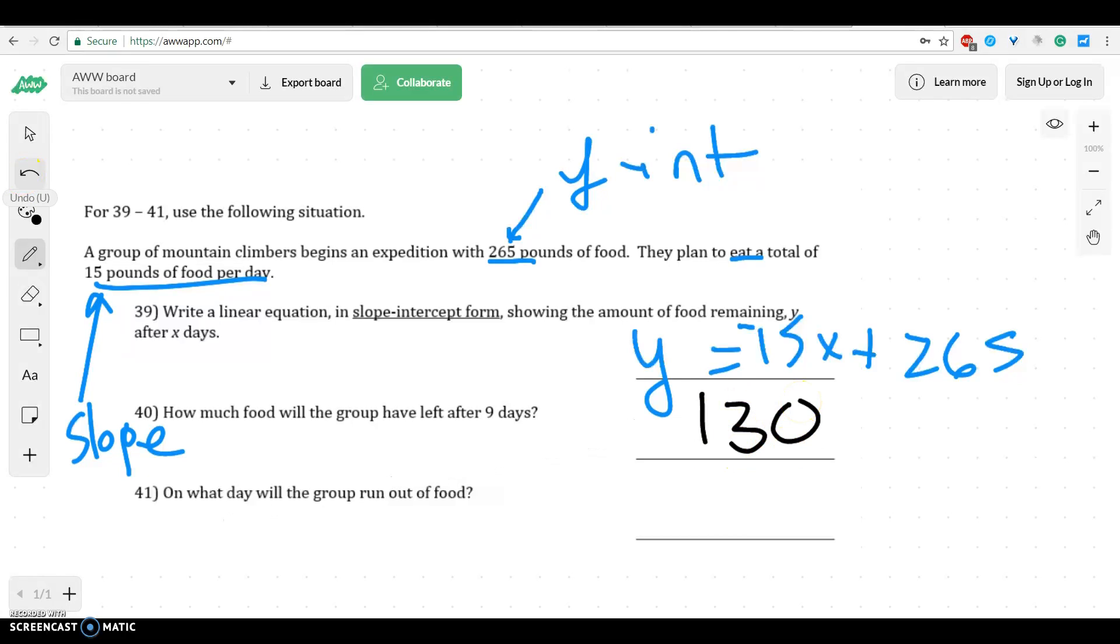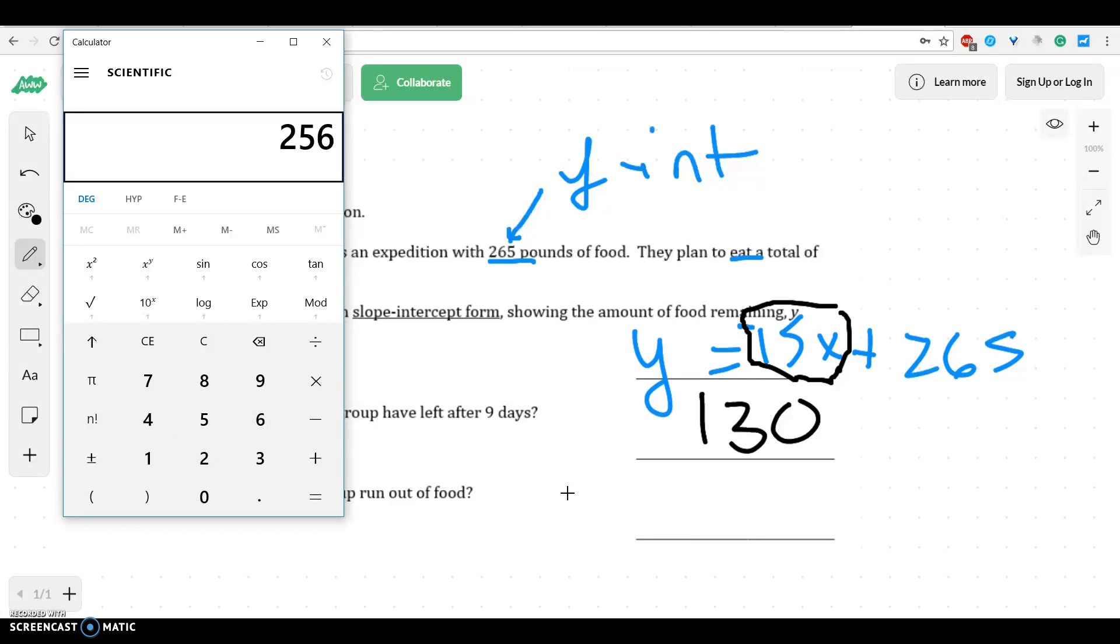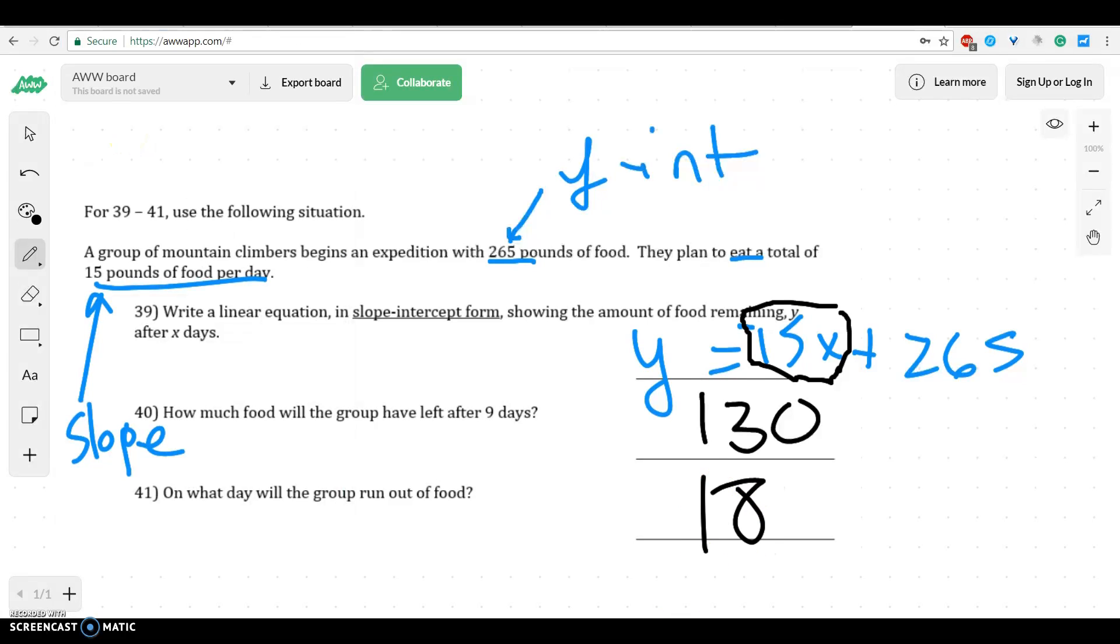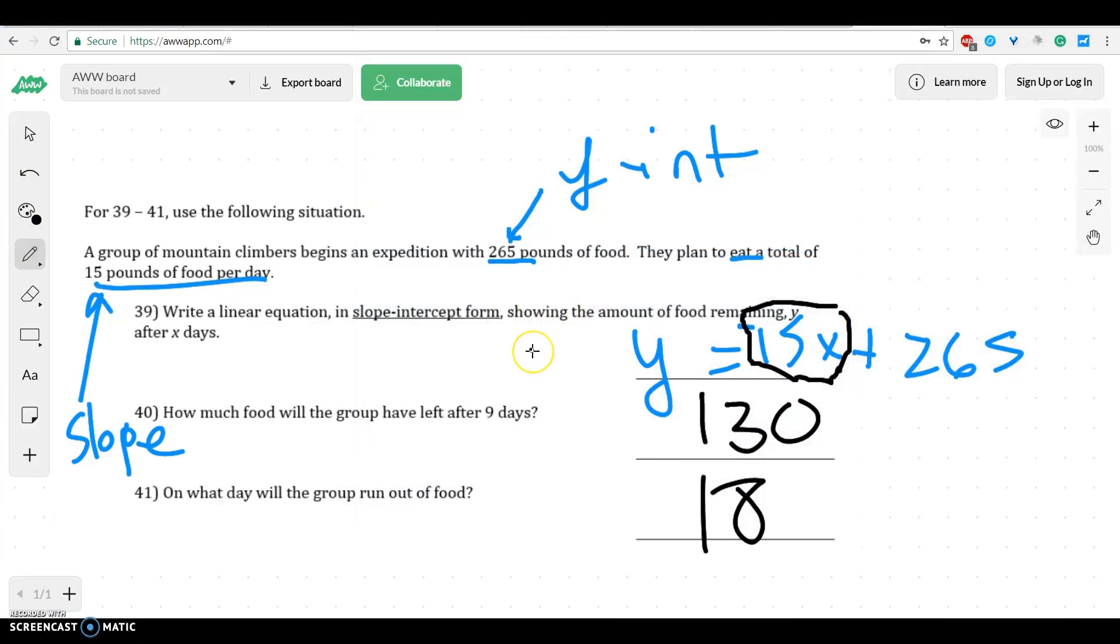On what day would the group run out of food? Well, that means we'd have no food. So we want this to become the same as 265. Or a better way of thinking about that is if we took 265, whoops, and divided it by 15. It looks like it would take us around 17 days for that to work out. Probably on the 18th day we'd run out of food. So we'd have a little bit left over after 17 days, but not quite enough.